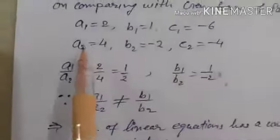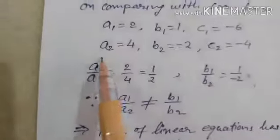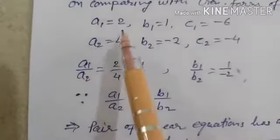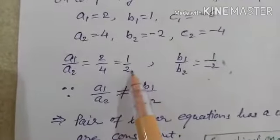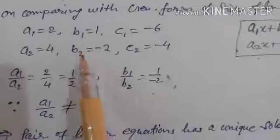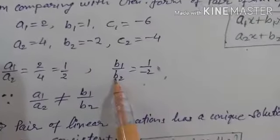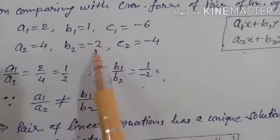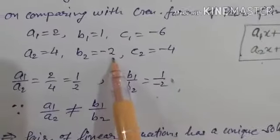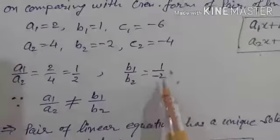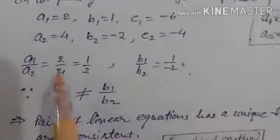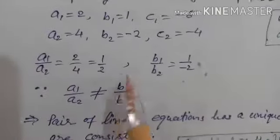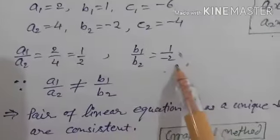Now find the ratio a1 upon a2. Here a1 upon a2 means 2 by 4, which simplifies to 1 by 2. Now find b1 by b2: b1 is 1 and b2 is minus 2, so their ratio is 1 upon minus 2. Since a1/a2 equals 1/2 and b1/b2 equals minus 1/2, both are not equal.